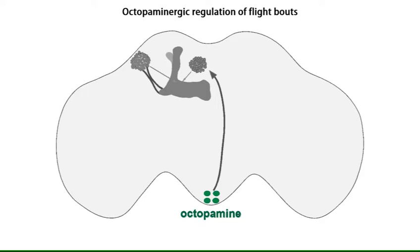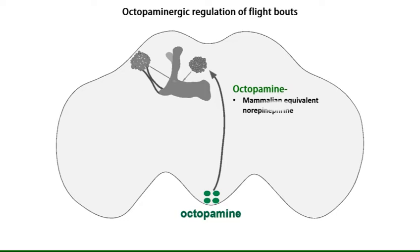The neurotransmitter octopamine is known to regulate flight bout durations in several insects, including fruit flies. We identified two pairs of octopaminergic neurons, activity in which is required for longer flight durations.